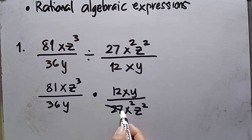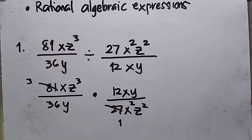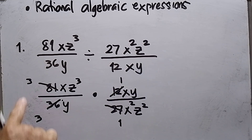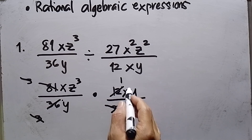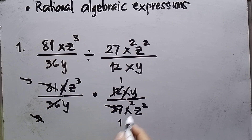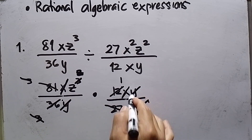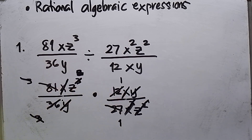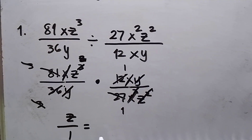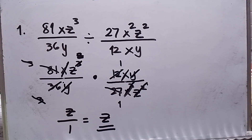Let us reduce: 81 divided by 27 is 3, and 36 divided by 12 is 3, then 3 divided by 3 is 1. For the variables: x cancels with x, giving x² which cancels; z² cancels with z², leaving one z in the numerator. So the answer for number 1 — the quotient — is z. Now let's move to number 2.